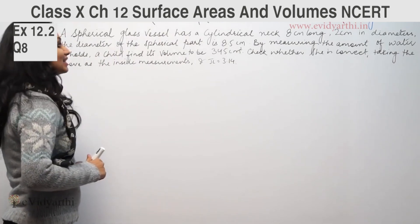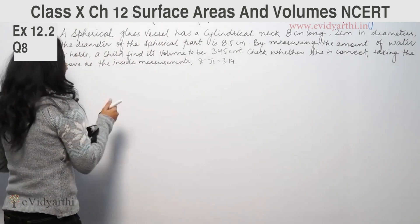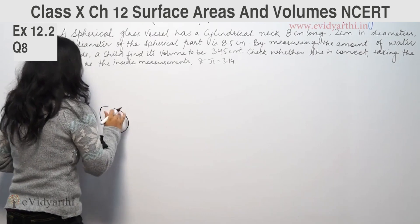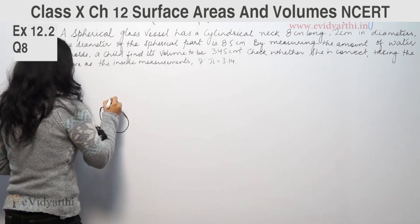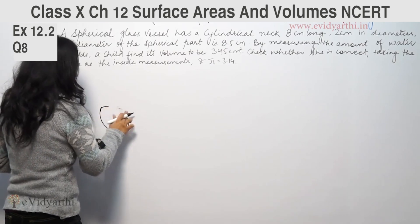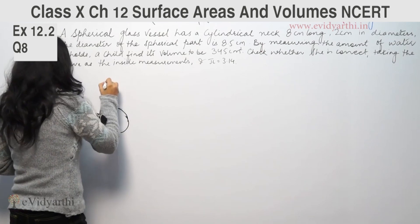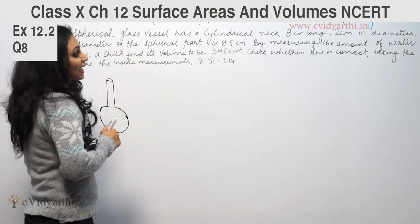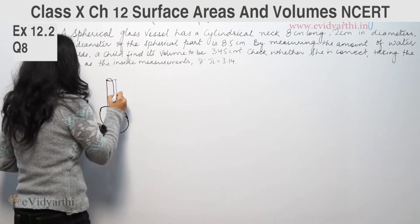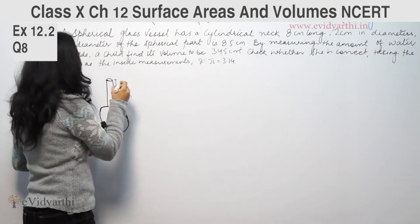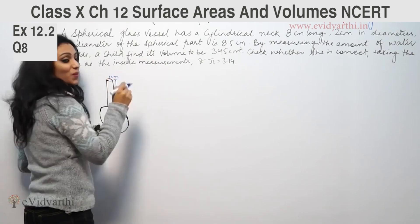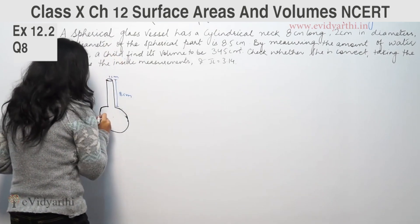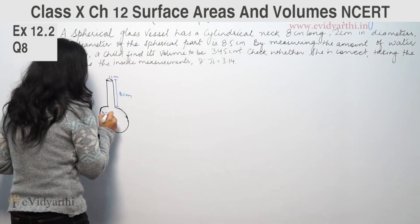This says a spherical glass vessel has a cylindrical neck. The cylindrical neck is 8 cm long. The neck length is 8 cm and 2 cm in diameter. Diameter 2 cm means radius is 1 cm. The diameter of the spherical part is 8.5 cm, so the radius is 4.25 cm.